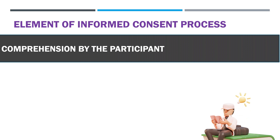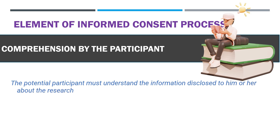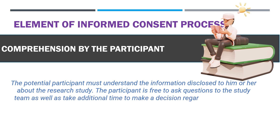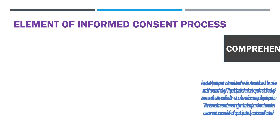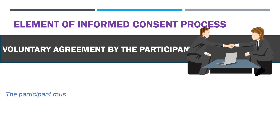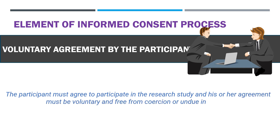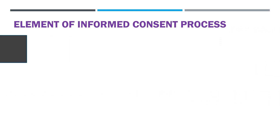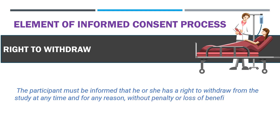3. Comprehension by the participant — the potential participant must understand the information disclosed to them about the research study. The participant is free to ask questions and take additional time to make a decision. The informed consent document might include a quiz or other documented assessment to verify that the participant truly understands the study. 4. Voluntary agreement by the participant — the participant must agree to participate voluntarily and free from coercion or undue influence. 5. Right to withdraw — the participant must be informed that he or she has a right to withdraw from the study at any time and for any reason, without penalty or loss of benefits.